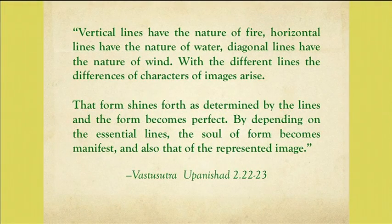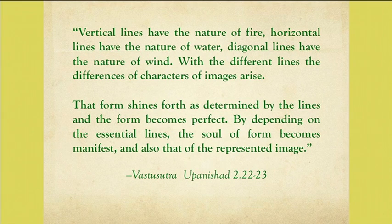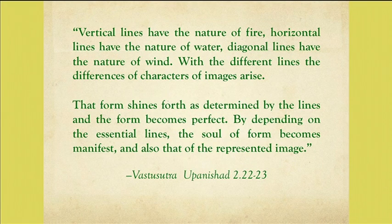In Vastu Sutra Upanishad it is written: Vertical lines have the nature of fire. Horizontal lines have the nature of water. Diagonal lines have the nature of wind. From the differences of characters of image arise. That form shines forth as determined by the lines, and the form becomes perfect. By depending on the essential lines, the soul of form becomes manifest, and also that of the represented image.